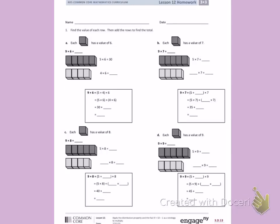This is Module 3, Lesson 12 Homework on the front. Today's objective was to apply the distributive property and the fact 9 equals 10 minus 1 as a strategy to multiply.